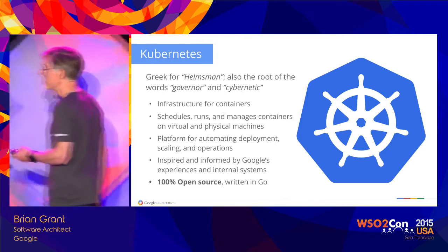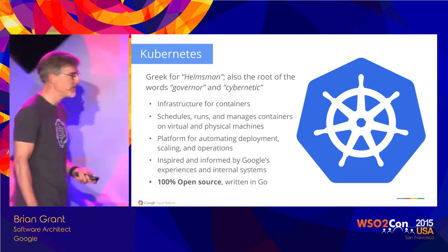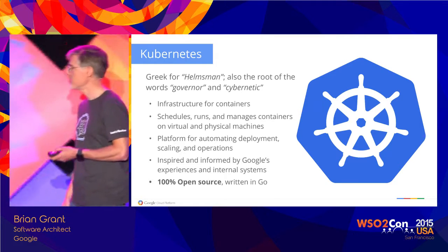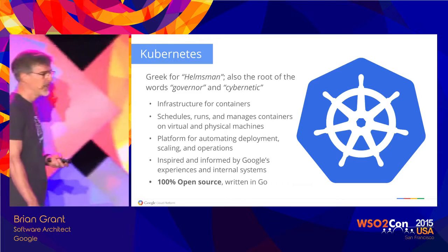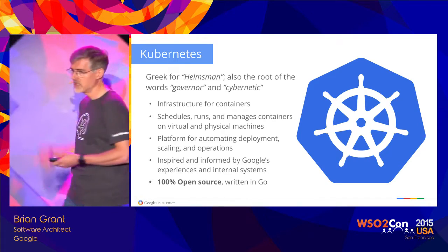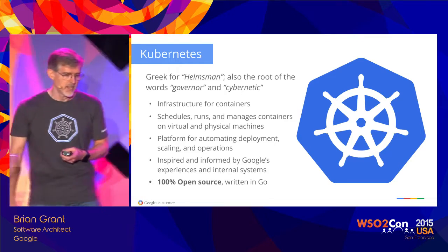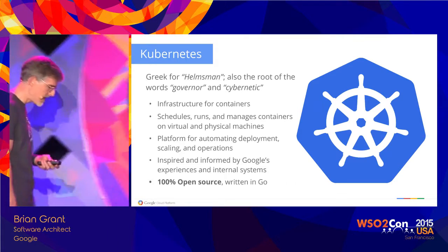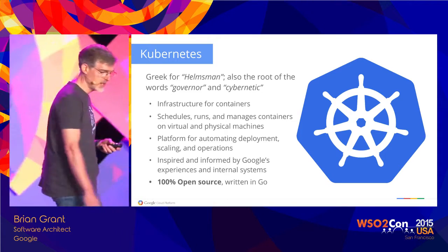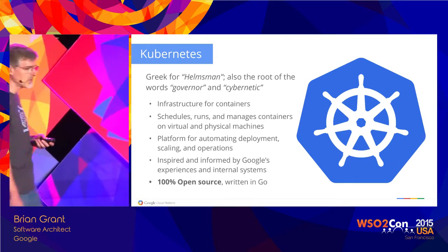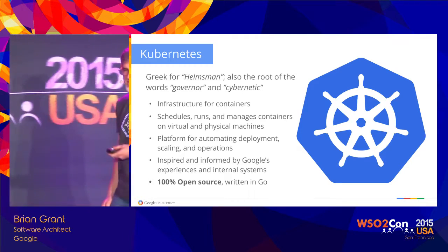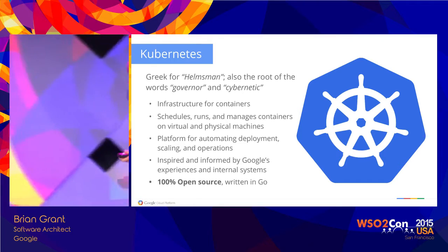That's where Kubernetes comes in. Kubernetes is Greek for helmsman — and if you know Docker, you know there are a lot of shipping analogies in the Docker ecosystem. It's also the root of the word cybernetic, which we think is appropriate. Kubernetes provides infrastructure for containers: it schedules, runs, and manages containers on clusters of virtual and physical hosts. It's a platform for automating deployment, scaling, and operations for applications packaged in containers. Kubernetes was inspired by Google systems — I previously worked on Borg and Omega — and we launch billions of containers every week inside Google.